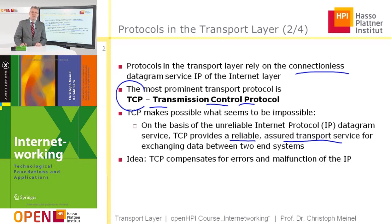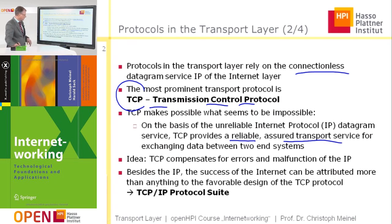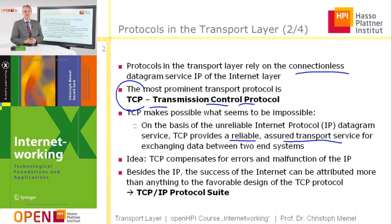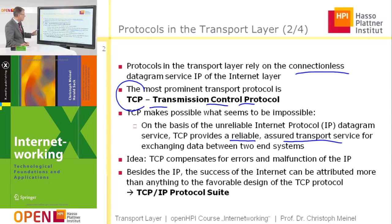The question is how this can be organized. The idea is that the TCP protocol compensates for the possible errors and malfunctions of the IP protocol. The great success of the internet is due, on one side, to the functionality provided by the IP protocol with the datagram service, and on the other side, it is based on this possibility to transmit in a reliable and guaranteed way messages over the internet.